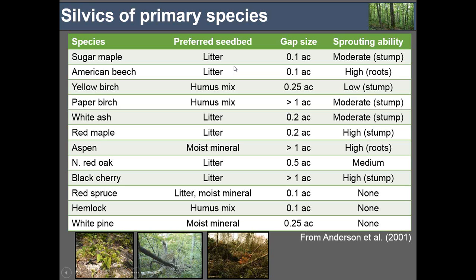The seedbed requirements for most of these species are quite unique. The dominant species — sugar maple, beech, red maple, white ash — all have large seeds that can penetrate leaf litter, so they do well on a litter seedbed with adequate duff and moisture. Whereas species like yellow birch and hemlock have much smaller seeds and require mineral soil exposure, or at least a humus-mineral soil mix, as would have occurred under natural wind disturbances. Similarly, many shade-tolerant species only need about a tenth-acre gap to recruit to the overstory, while paper birch and aspen need much larger gaps.